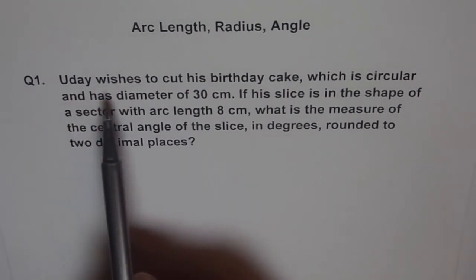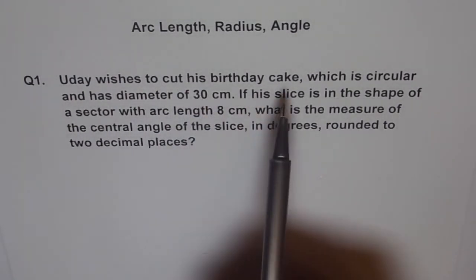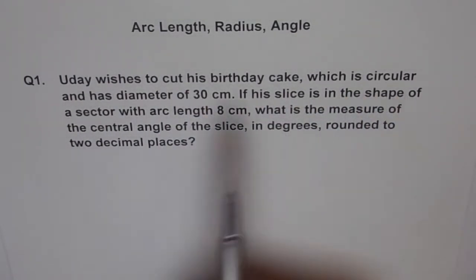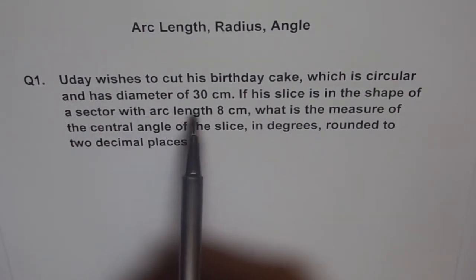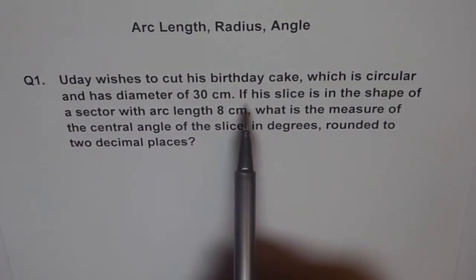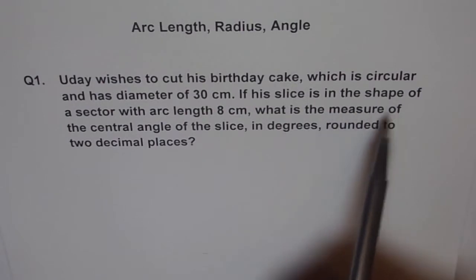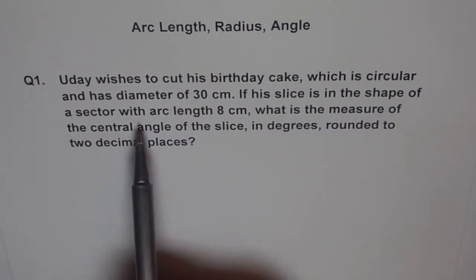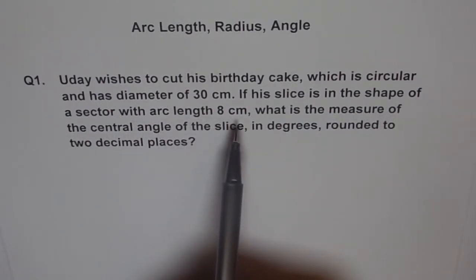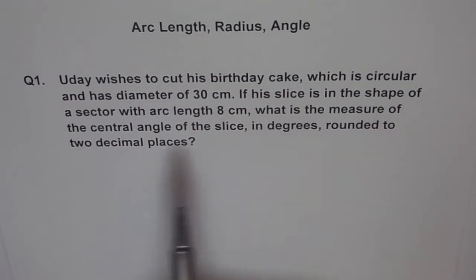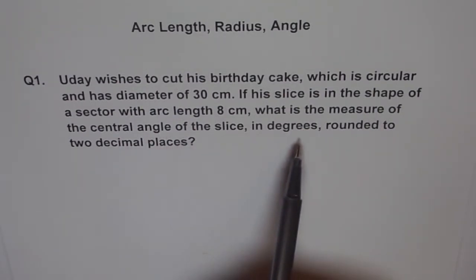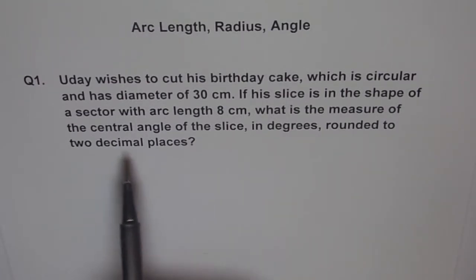Let's go through it. It says, Uday wishes to cut his birthday cake, which is circular and has diameter of 30 cm. If his slice is in the shape of a sector with arc length 8 cm, what is the measure of central angle of the slice in degrees, rounded to 2 decimal places.